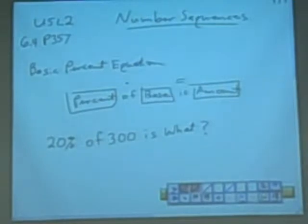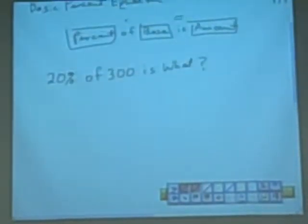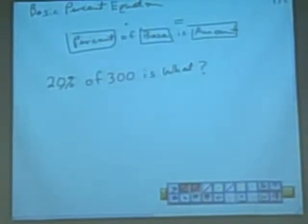So if we have 20% of 300 is what value? And we can plug that into our equation. And we would convert 20% to 20 over 100 times 300. Is means equals what? So we would make that equal to x.